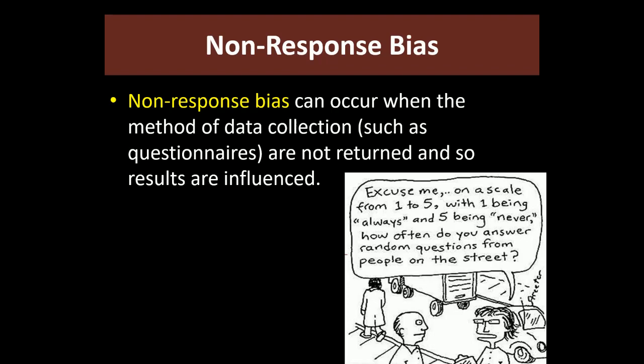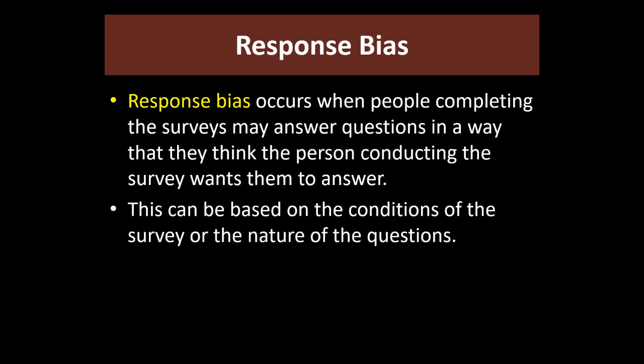Non-response bias can also occur in simpler situations. For instance, if you hand out surveys in homerooms about school dances, people who aren't interested in school dances won't fill it out, and people who are interested will. That means the results about how many people want to go to the dance are going to be disproportionately high.